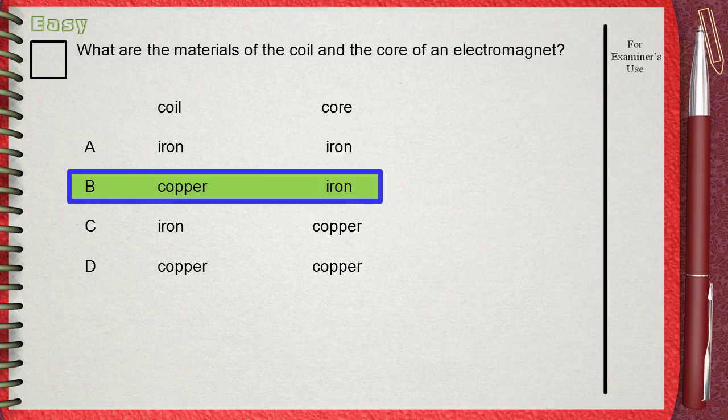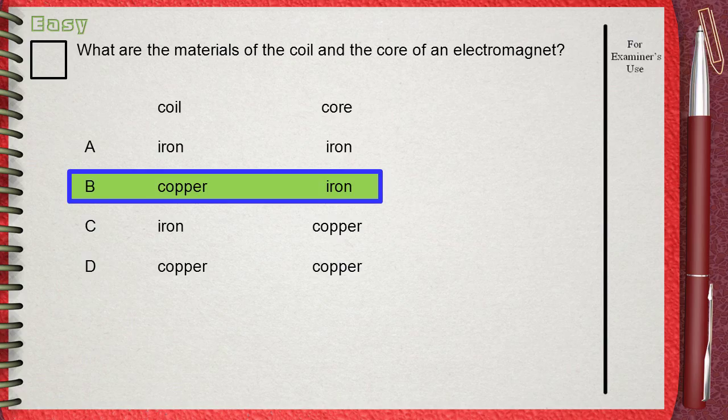Iron is a soft magnetic substance that acquires the magnetic property easily and loses it easily. That's why it's suitable for the core. The answer is B.